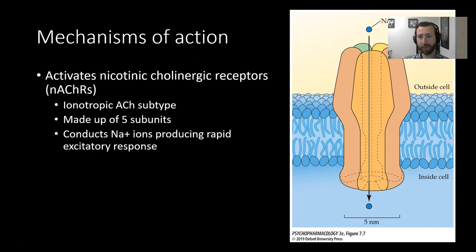You might remember these from our acetylcholine chapter. If you're a little hazy on how these receptors work, you can always go back and look at that. These are ionotropic receptors, so they govern a sodium channel. They are made up of five subunits. If you remember our little meerkat example, these are little protein meerkats that form a pore in the cell membrane that will allow sodium to pass through when an appropriate ligand binds, be that acetylcholine or, in this instance, nicotine.